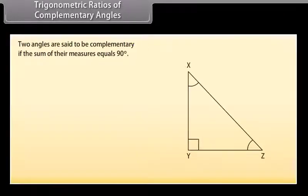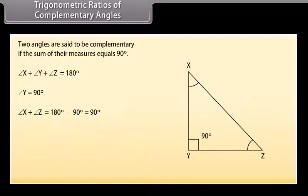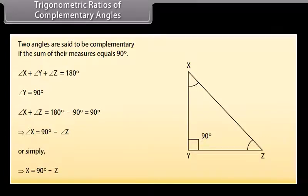Trigonometric ratios of complementary angles: Two angles are said to be complementary if the sum of their measures equals 90°. Consider triangle XYZ right-angled at Y. Angle X + angle Y + angle Z = 180°, so angle X + 90° + angle Z = 180°, which gives angle X = 90° − angle Z. Or simply, X = 90° − Z.